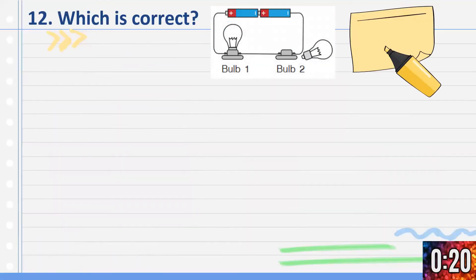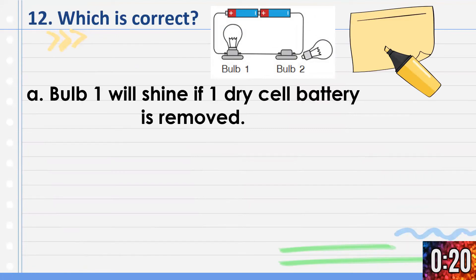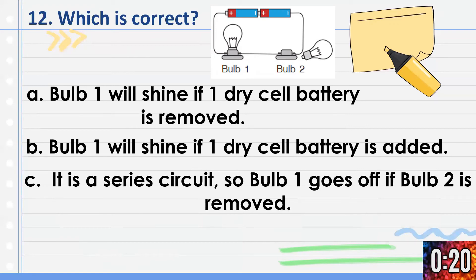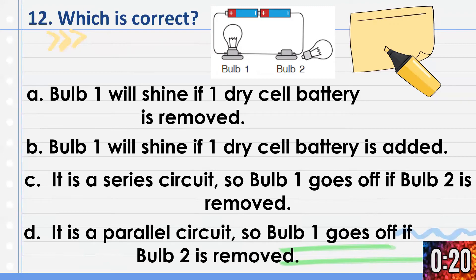Let's proceed to number 12: Which is correct? Again refer to the picture. A) Bulb 1 will shine if one dry cell battery is removed. B) Bulb 1 will shine if one dry cell battery is added. C) It is a series circuit, so bulb 1 goes off if bulb 2 is removed. D) It is a parallel circuit, so bulb 1 goes off if bulb 2 is removed. Timer starts now.